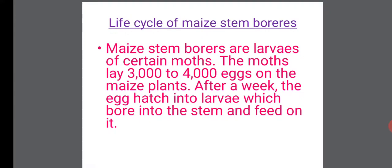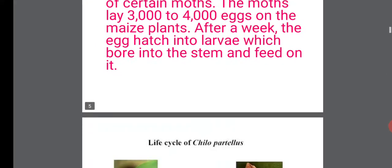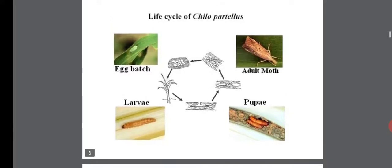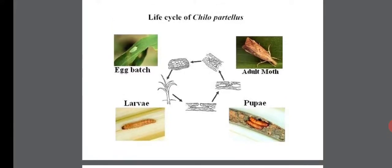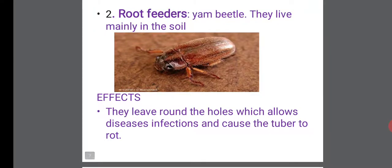Life cycle of maize stem borers: the maize stem borers are larvae of certain moths. The moths lay 3,000 to 4,000 eggs on the maize plant. After a week, the eggs hatch into larvae which bore into the stem and feed on it, just like what you can see in the diagram on your screen. From the egg, hatching to larva, to pupae, then to adult moths — that is the life cycle of the maize stem borers.